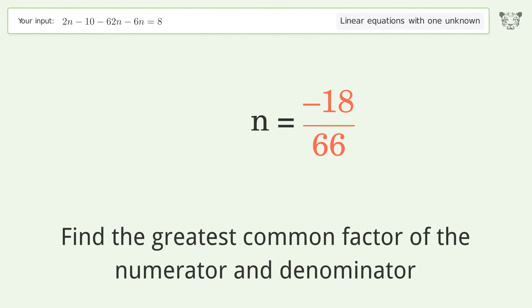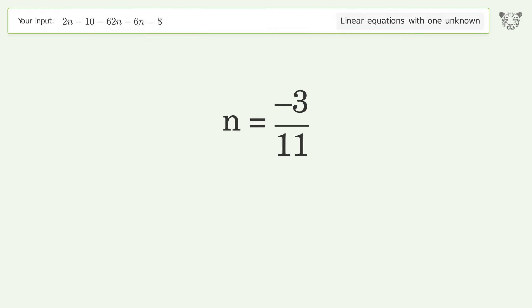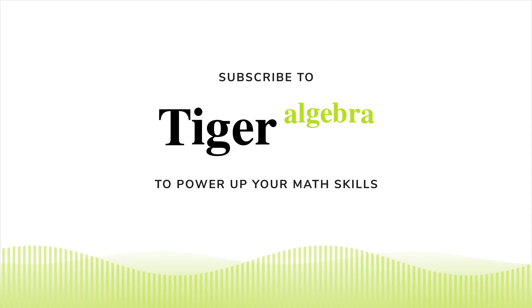Find the greatest common factor of the numerator and denominator. Factor out and cancel the greatest common factor. And so the final result is n equals negative 3 over 11.